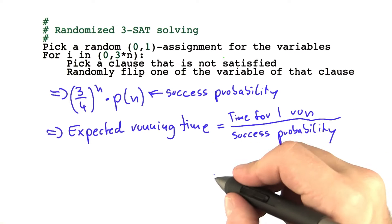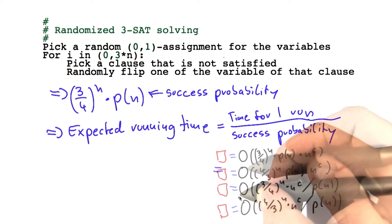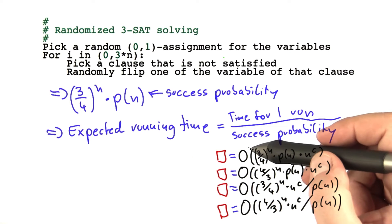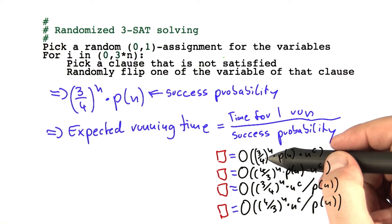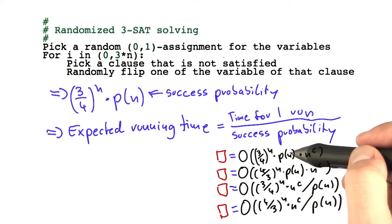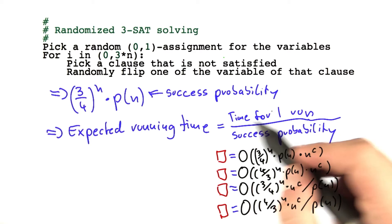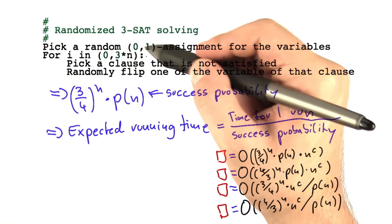I'm going to let you figure out the final answer for this as our next quiz. Is the expected running time O of three-quarters to the power of n times a polynomial of n, which is this polynomial here, times some other polynomial which will represent the time for one run of this algorithm?